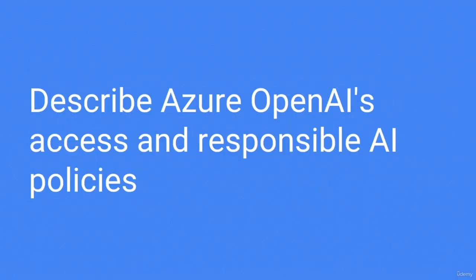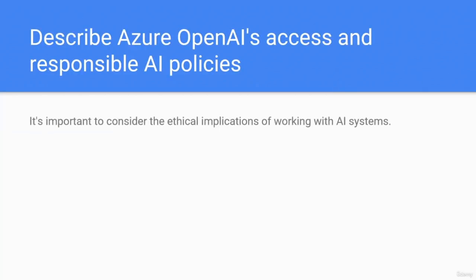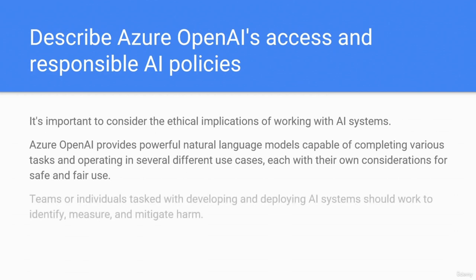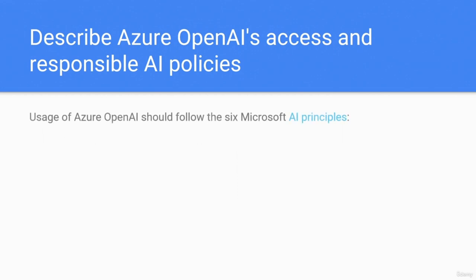Describe Azure OpenAI's access and responsible AI policies. It's important to consider the ethical implications of working with AI systems. Azure AI provides powerful natural language models capable of completing various tasks across several use cases, each with their own consideration for safe and fair use. Teams tasked with developing and deploying AI systems should work to identify, measure, and mitigate harm. Usage of Azure OpenAI should follow the six Microsoft AI principles.